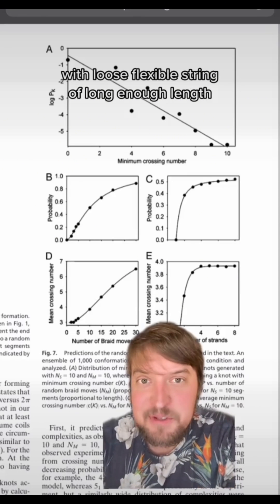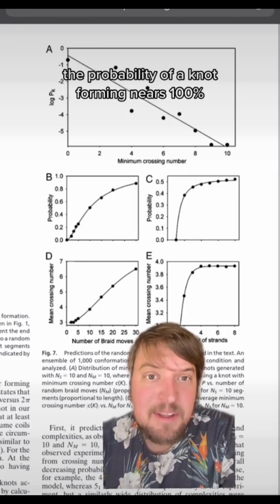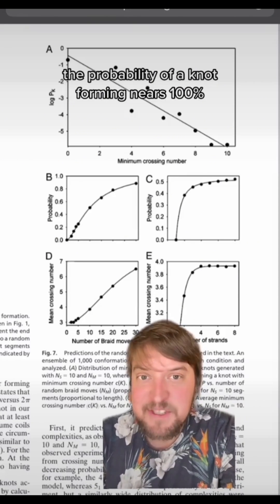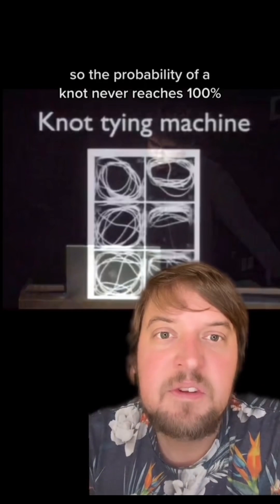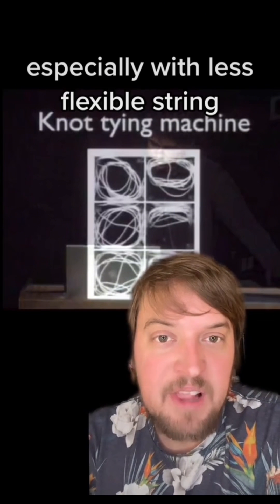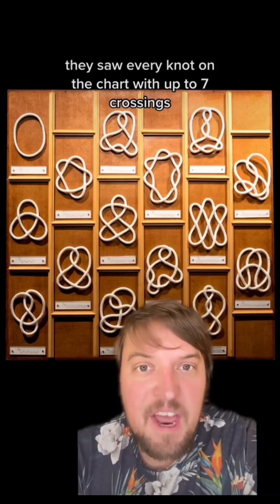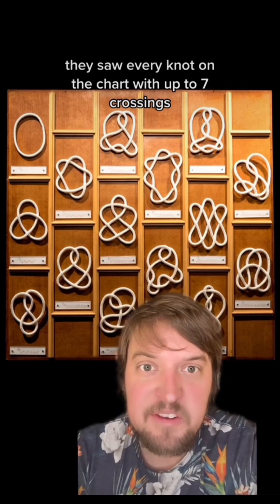With loose, flexible string of a long enough length, the probability of a knot forming nears 100%. But there are some confinement effects when the string starts to fill up the box, so the probability never reaches 100%, especially with less flexible string. They saw every knot on the chart with up to seven crossings.